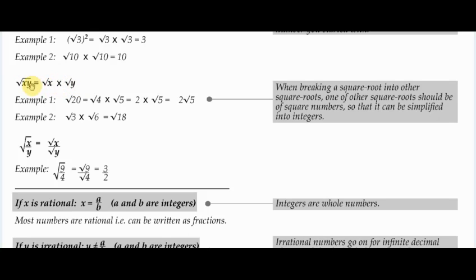The next rule looks a bit confusing if you're not comfortable with algebra. It's supposed to represent a single number. If a single number is a product of two other numbers like x and y, then you can break that single square root into two other square roots. For example, square root of 20 can equal square root of 4 times square root of 5, because 4 times 5 equals 20. You could also do root 2 times root 10, because 2 times 10 also equals 20. As long as the product of the two numbers under the square roots equals the original number, you're fine.